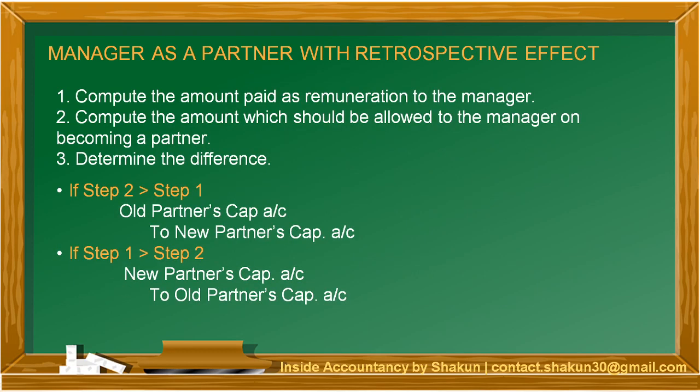Manager as a Partner with Retrospective Effect is a kind of guarantee which is given by the firm to one of its managers. The manager is made one of the partners of the firm, and the effect is either shown from the current accounting year or from a back date — from previous accounting years. It might be possible that the manager becomes a partner and the effect is shown from 3 or 4 years back. This is what is meant by Manager as a Partner with Retrospective Effect.